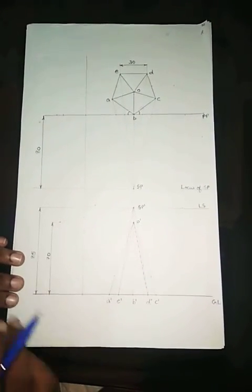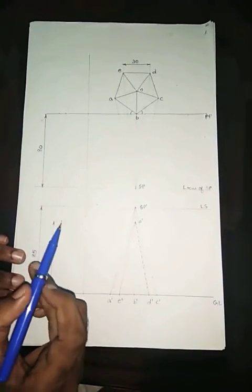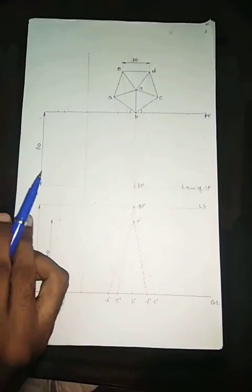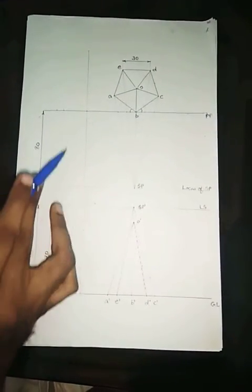Next we are going to draw the orthographic projection of a pentagonal pyramid. Earlier also we had drawn a pentagonal square pyramid. Now here we are going to draw a pentagonal pyramid. There is a small difference here.